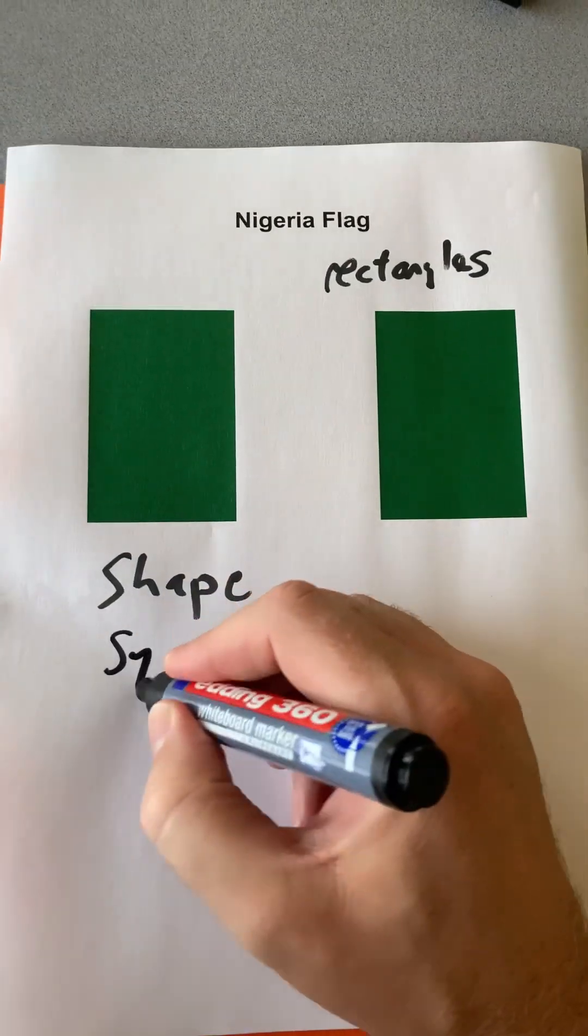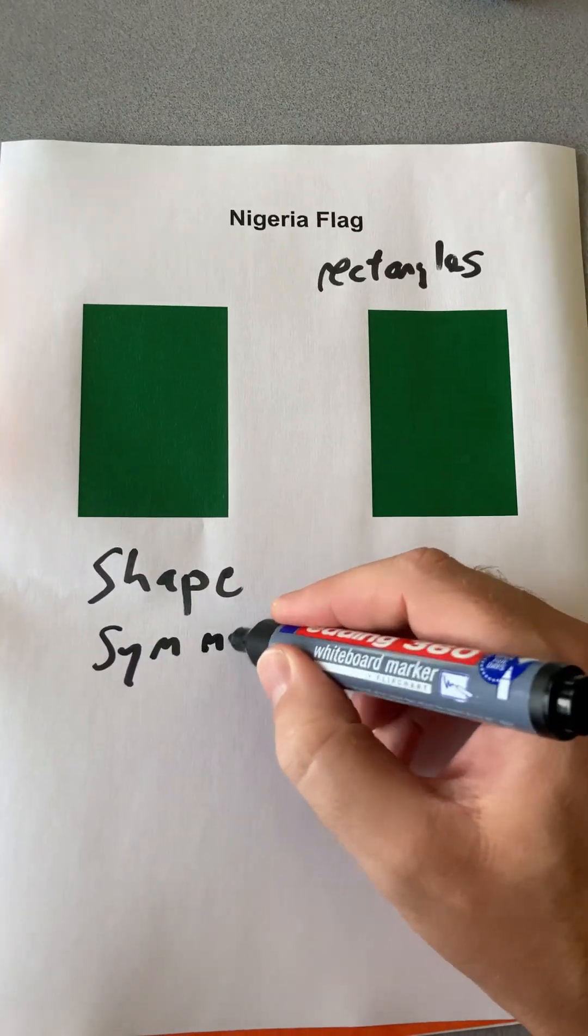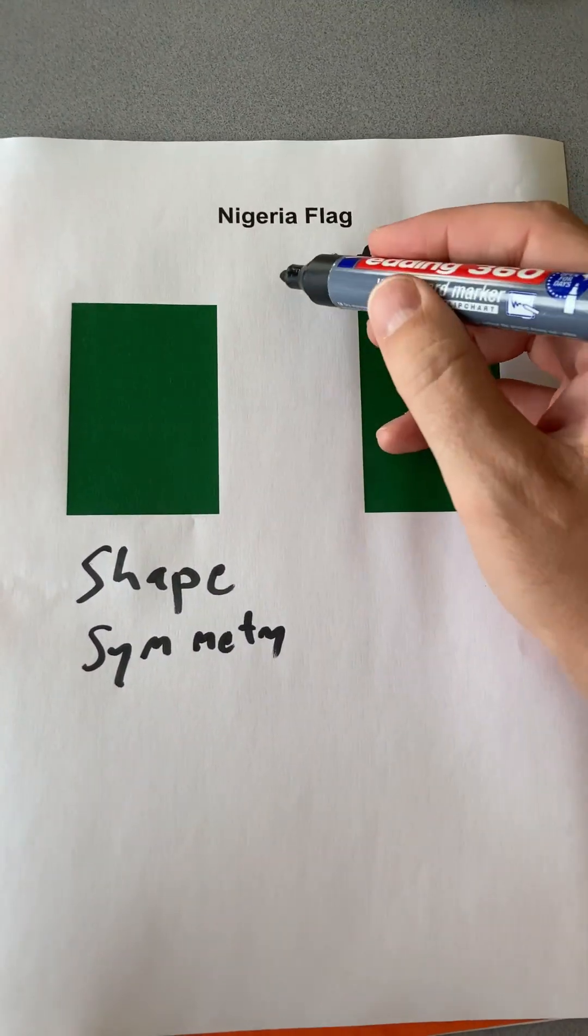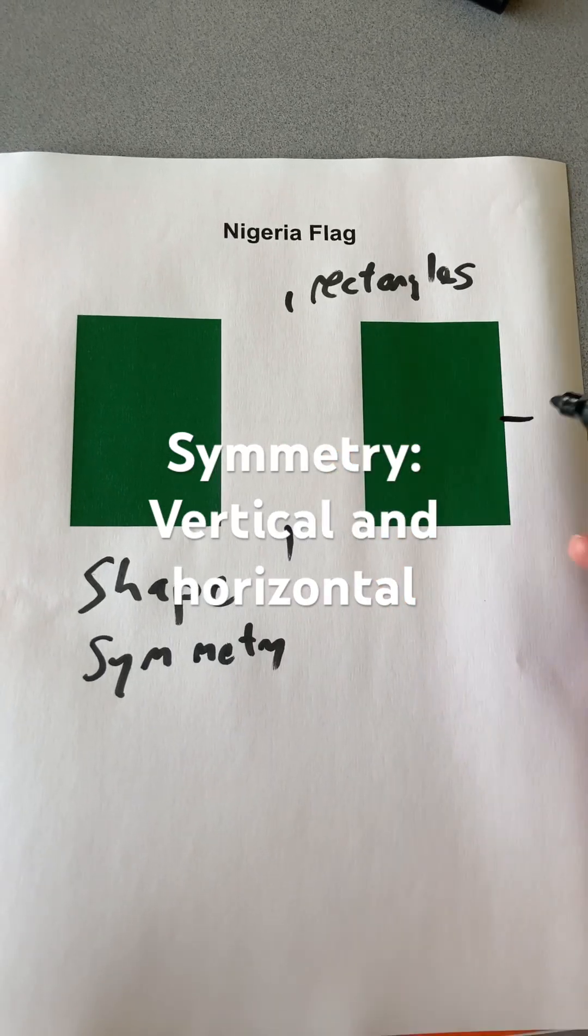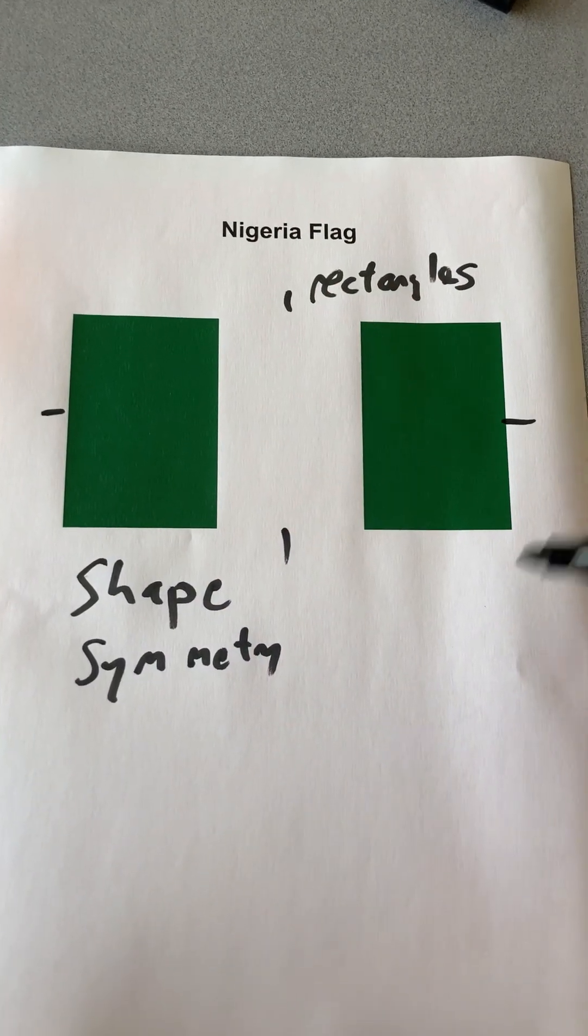Then we also have symmetry. We can see if we put a mirror line in the middle there it's symmetrical both sides, and also horizontally if we put a mirror line across there it would be the same.